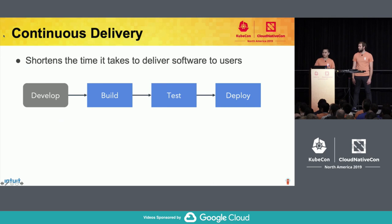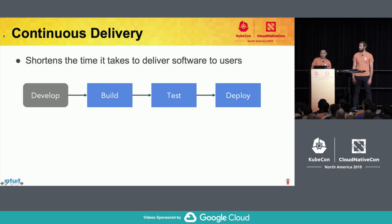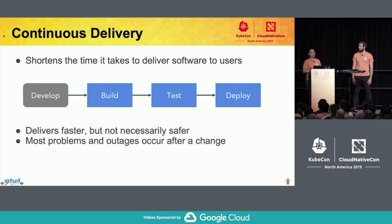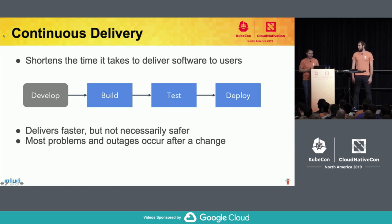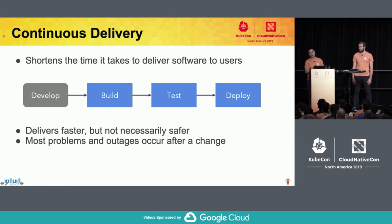Before we get into progressive delivery, let's take a step back and talk about continuous delivery. CD was all about shortening the time it took to get your code to your users, by having short and predictable software development cycles — continuously developing, building, testing, and deploying in an automated fashion. While continuous delivery got us to a point where we can deliver software faster, it didn't necessarily make software delivery that much safer. Most outages and problems occur after you make a change, and with CD you're making changes much more frequently.